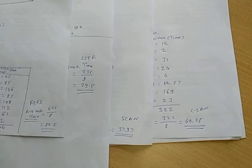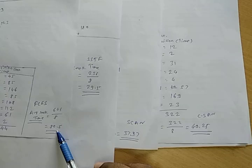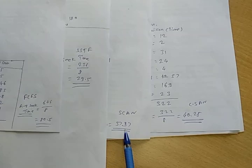Finally, comparing all algorithms: FCFS average seek time is 80.5, SSTF average seek time is 29.5, SCAN is 37.37, and C-SCAN is 40.25. According to our analysis, SSTF has the best average seek time among these disk scheduling algorithms. Thank you.